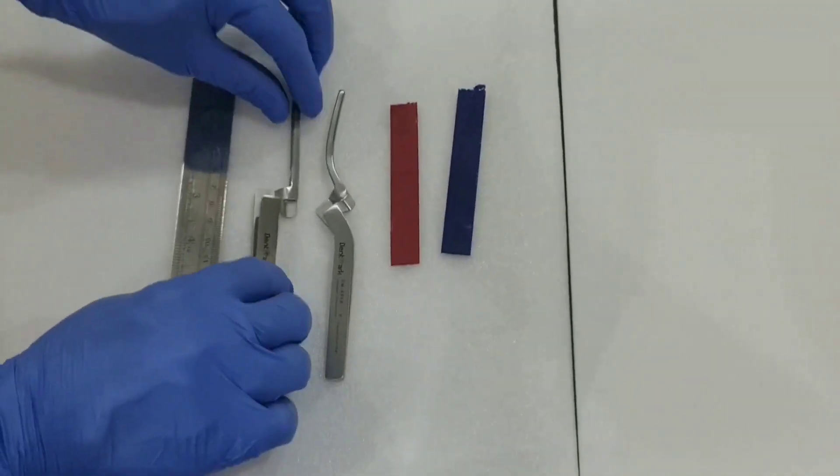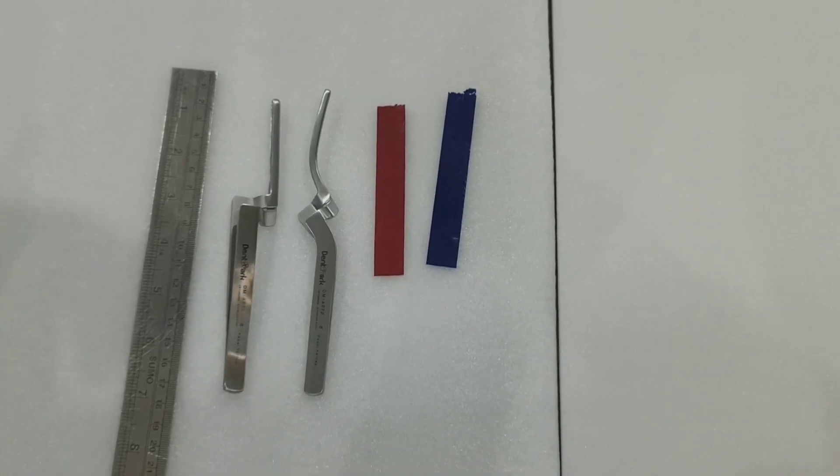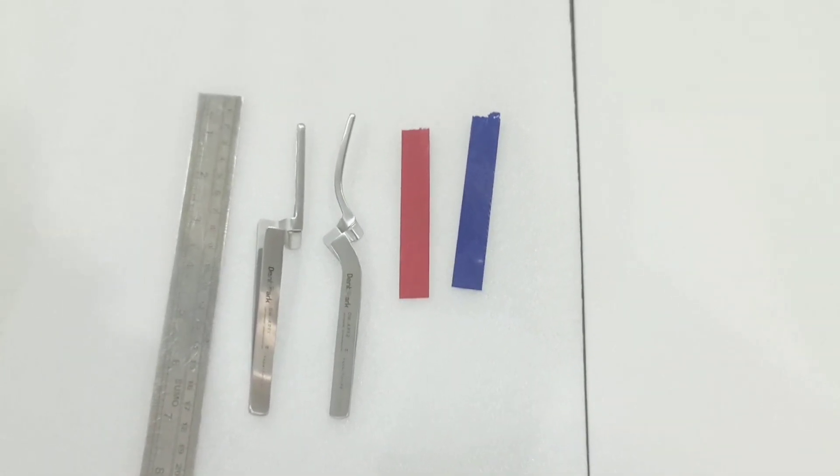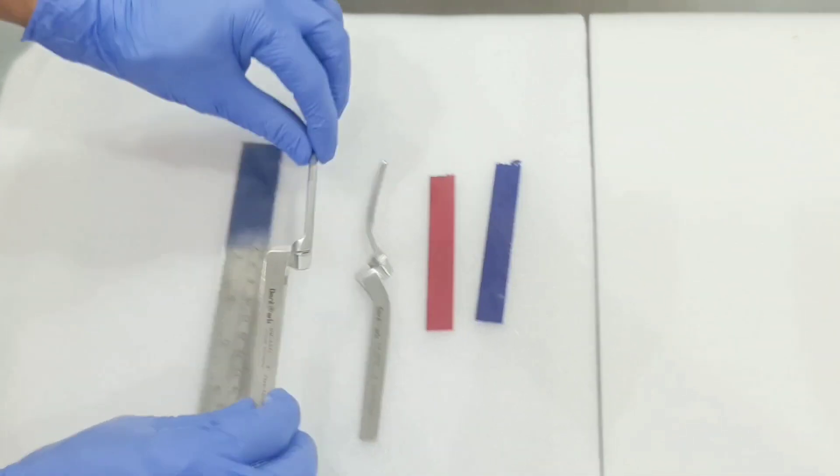It comes with a one-year warranty. There will be no rust, and you can autoclave it multiple times. You can buy this product online from our website, dentmark.in. The two models are APF-1, which is straight,